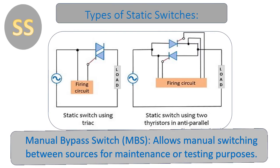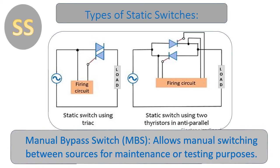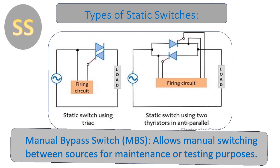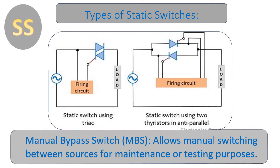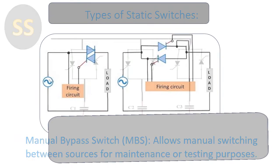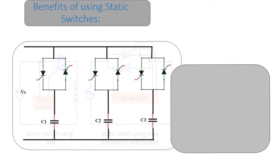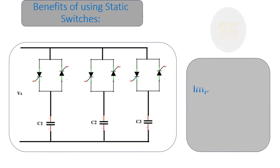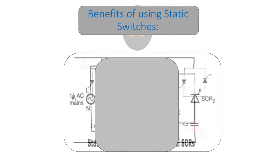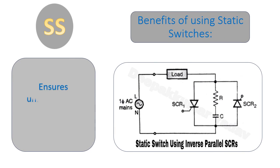Manual Bypass Switch (MBS) allows manual switching between sources for maintenance or testing purposes. Benefits of using static switches include improved power availability and reliability, ensuring uninterrupted power supply to critical loads.